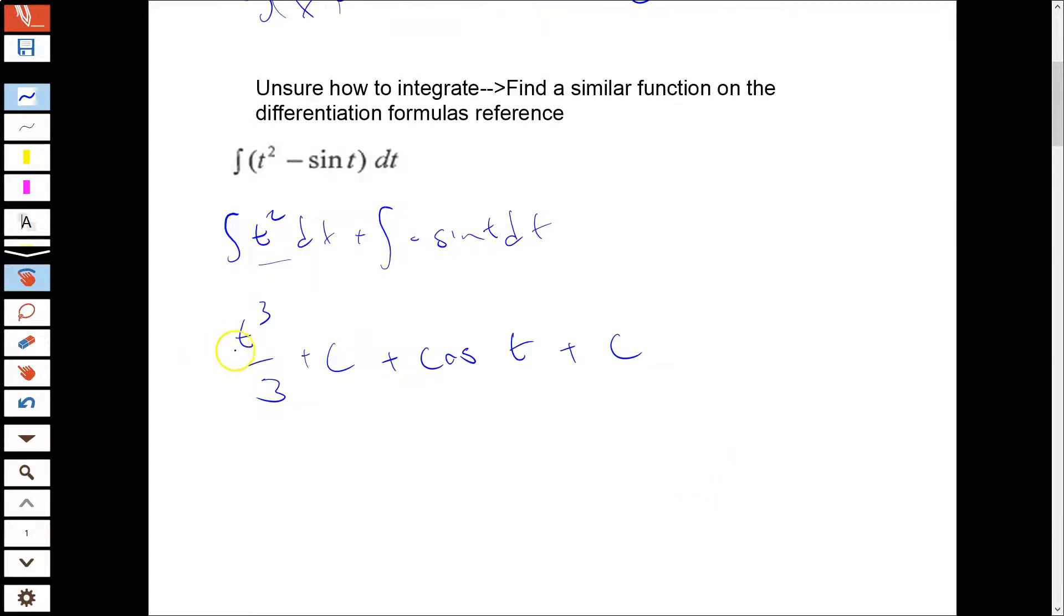Now there's a convention here. I have two different c's in my result. You might add these together and say like 2c, but we don't necessarily know they're even the same constant. But any c plus another c, any constant plus another constant, is just another constant. So the convention here is that we can combine these and just write one c. So t to the third over three plus cosine t plus c, and this c represents both of these constants.